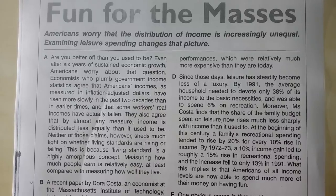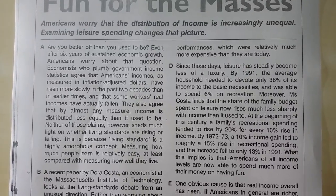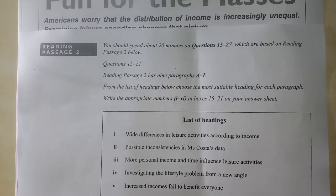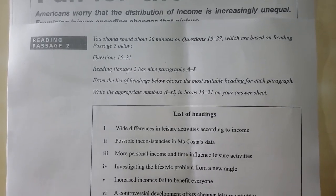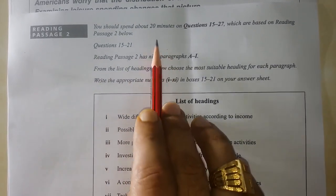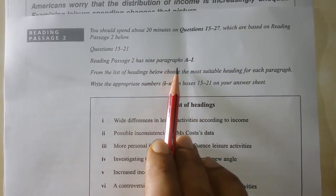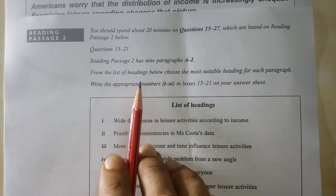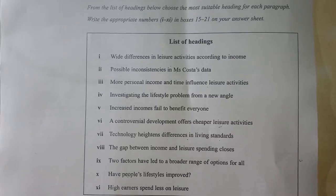The main thing is: first check the number of the paragraphs. Let's go to the page where the instructions are given. Please try to read the instructions always. They have given the time also, telling us how much time we have to spend. They said that there are 9 paragraphs, A to I, in reading passage 2.